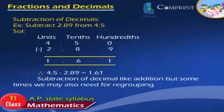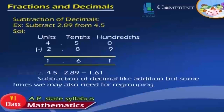Subtraction of Decimals. Example: subtract 2.89 from 4.5. Solution: 4.50 minus 2.89 gives 1.61. Therefore, 4.5 minus 2.89 is equal to 1.61. For subtraction of decimals, like addition, sometimes we may also need regrouping.